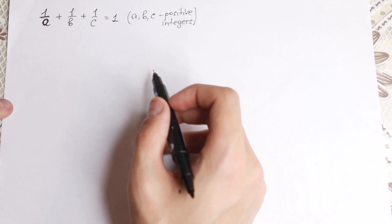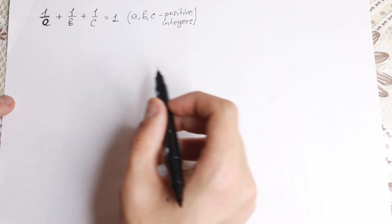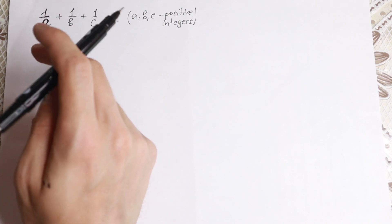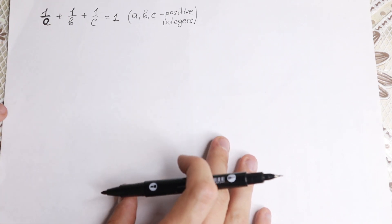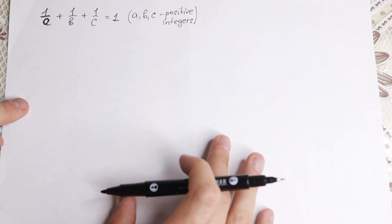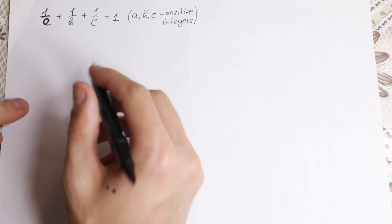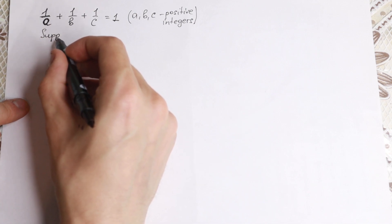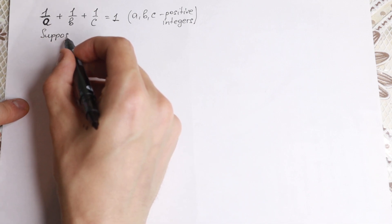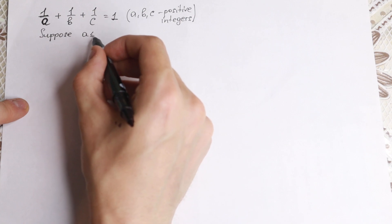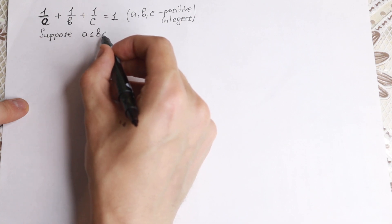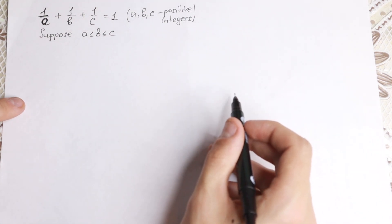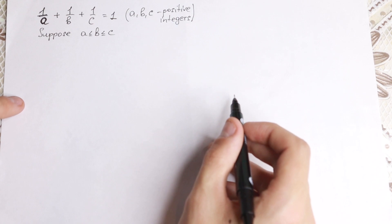Let's try to simplify it step by step. First of all, I want to find a common denominator, because if we find a common denominator, we will simplify this a little bit. But firstly, let's suppose that a ≤ b and b ≤ c.